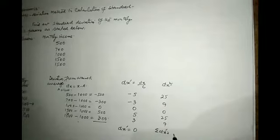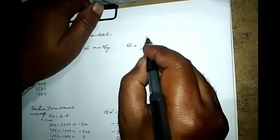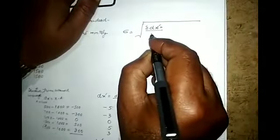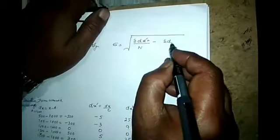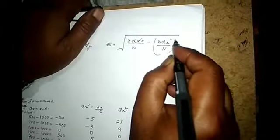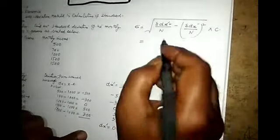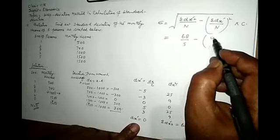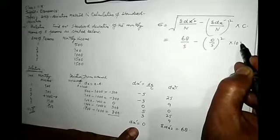Now we will place all these values in the formula. Standard deviation is equal to root of summation of dx dash square divided by n minus summation of dx dash divided by n whole square into c common factor. This will be equal to 68 divided by n, n is 5, minus 0 divided by 5 whole square into 100.